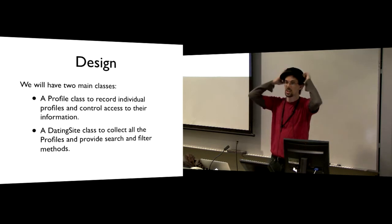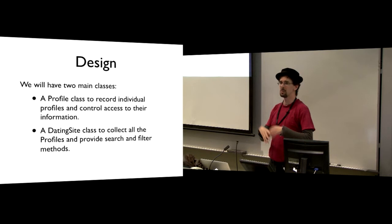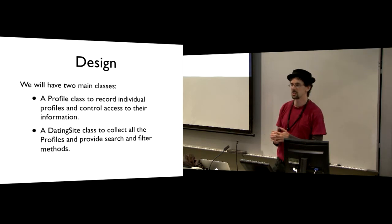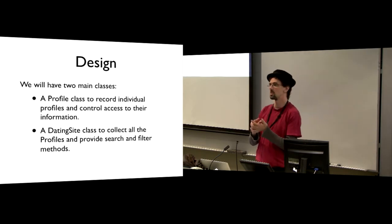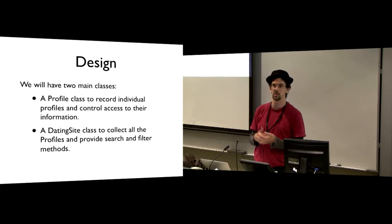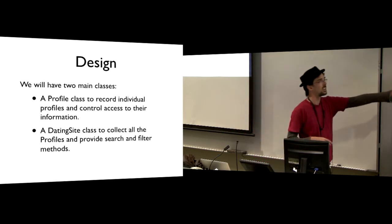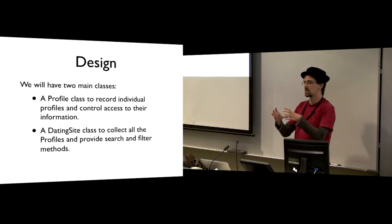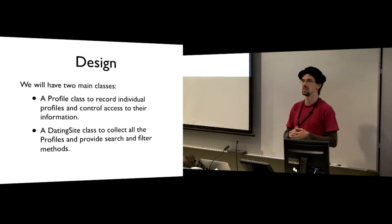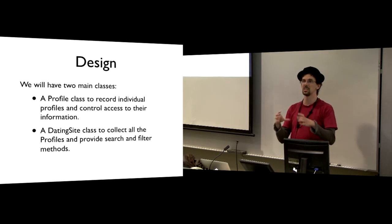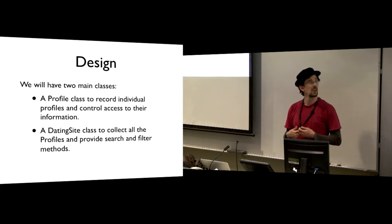So we have a specification of what we're trying to do. Now we need to start designing our code, and this is where it starts getting big. The first thing to think about is: what are the fundamental objects that are going to be represented in our code? What levels of abstraction are we going to be looking at? The outermost level is the dating site itself — we will have one dating site which will answer requests. Requests for searching, filtering, and things like that will be handled by the dating site object.